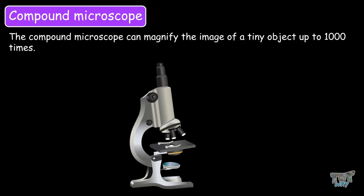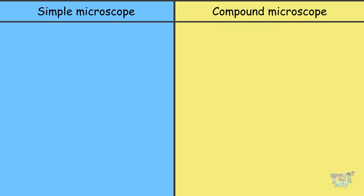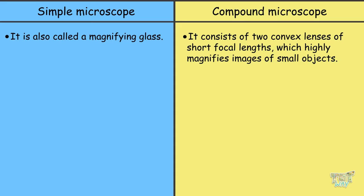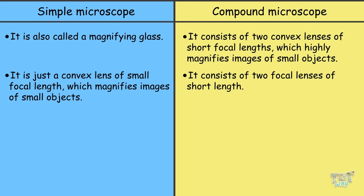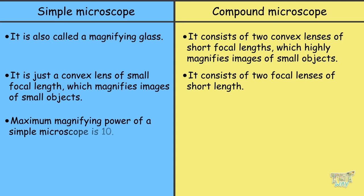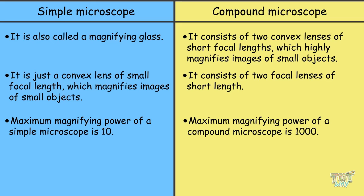Now before we learn more about the compound microscope, let's first learn the differences between a simple and compound microscope. A simple microscope is also called a magnifying glass. It is just a convex lens of small focal length, which magnifies images of small objects. A compound microscope consists of two convex lenses of short focal lengths, which highly magnifies images of small objects. The maximum magnifying power of a simple microscope is 10, whereas the maximum magnifying power of a compound microscope is 1000.